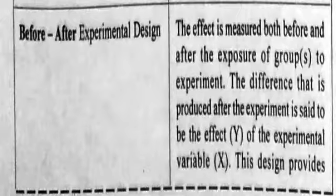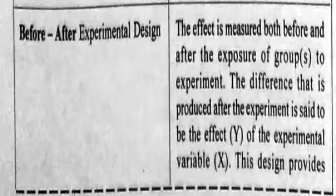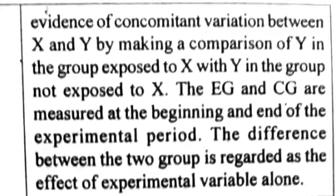In the before-or-after experimental design, the EG and CG are measured at the beginning and end of the experimental period. The difference between the two groups is regarded as the effect of the experimental variable alone.